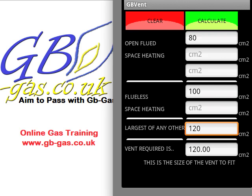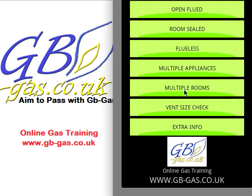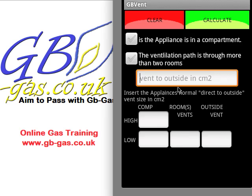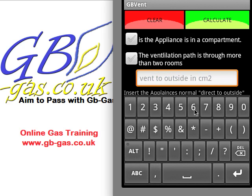Hitting the back button again, we can now look at multiple rooms. This is generally for open fluid appliances but can be used for flueless appliances as well — where I can't get out of the room in a straight clear path and have to go through maybe a corridor and through another room. We need to know what size of ventilation is required for the appliance fitted in that room, so in this scenario we'll suggest the boiler needs 56 cm².